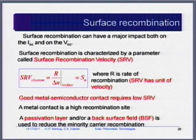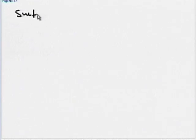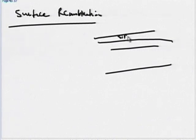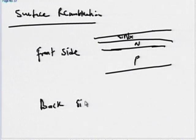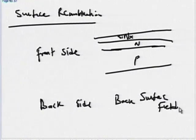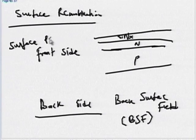To get high open circuit voltage, minimize surface recombination. At the front side, silicon nitride is deposited. At the back side, what is called a back surface field (BSF) is created to minimize recombination. BSF minimizes back-surface recombination while front passivation minimizes front-surface recombination.